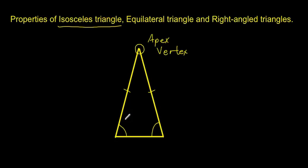Another property of an isosceles triangle is that if you drew an imaginary line down the middle, it would go directly down and split the base exactly in half.